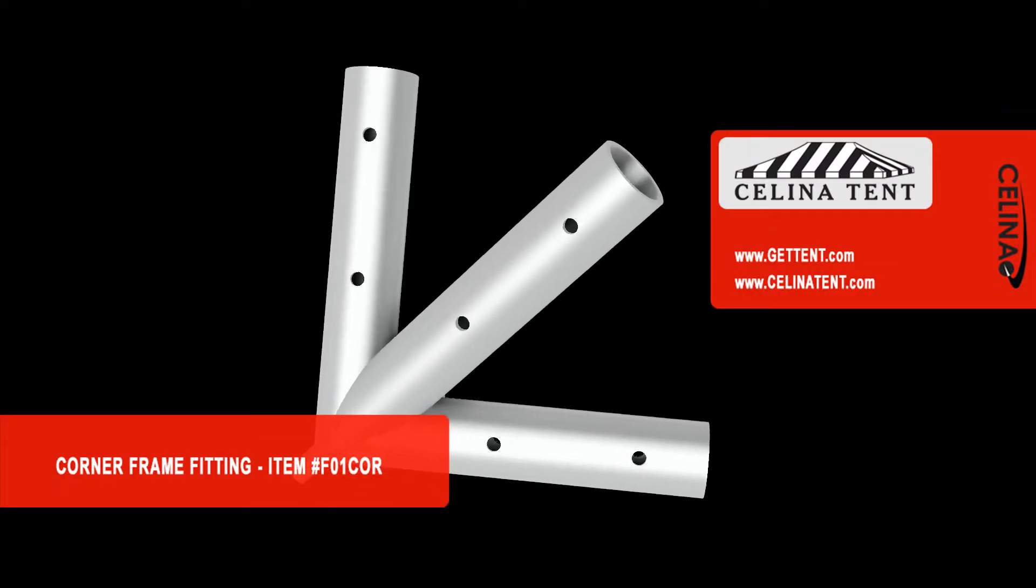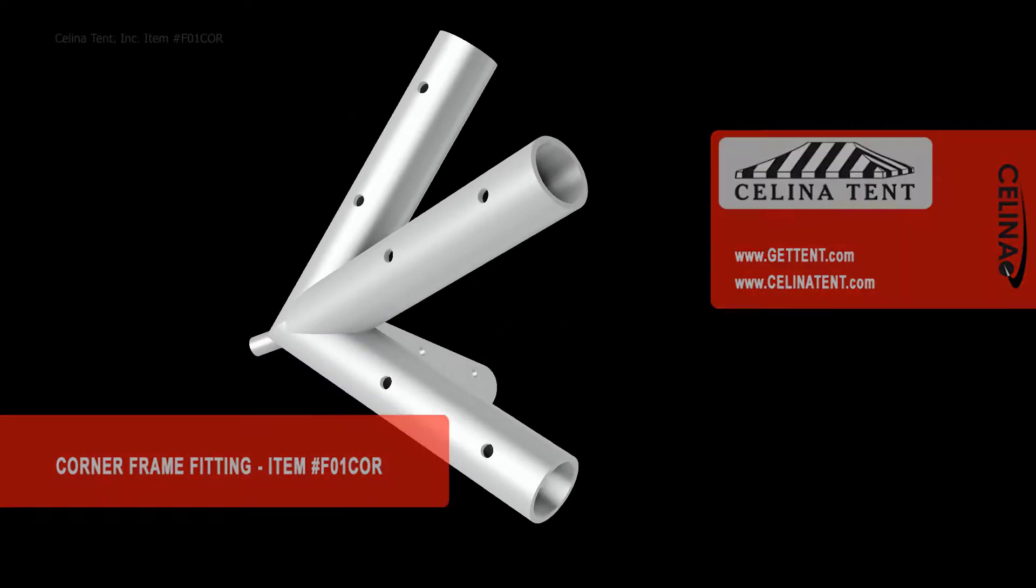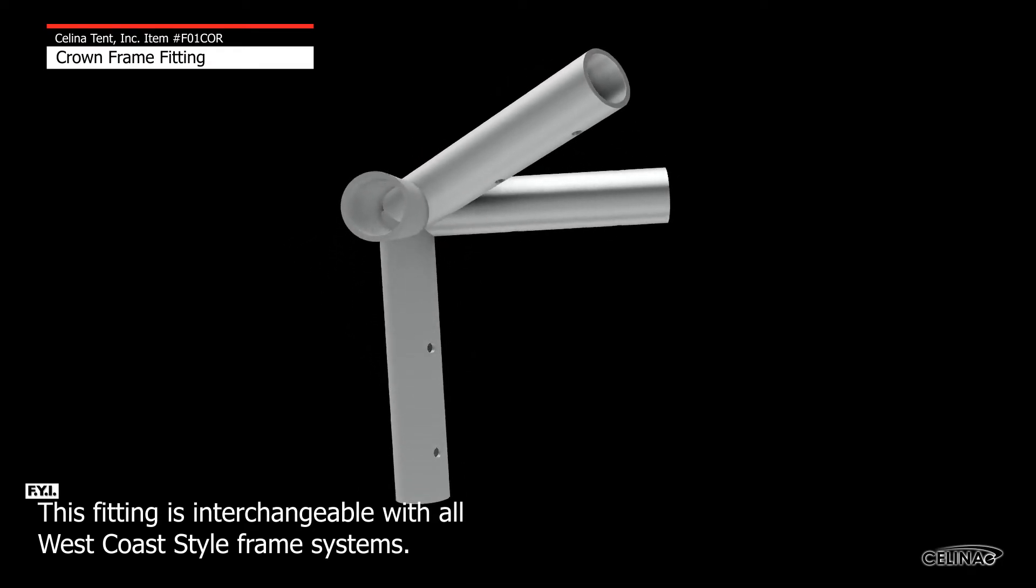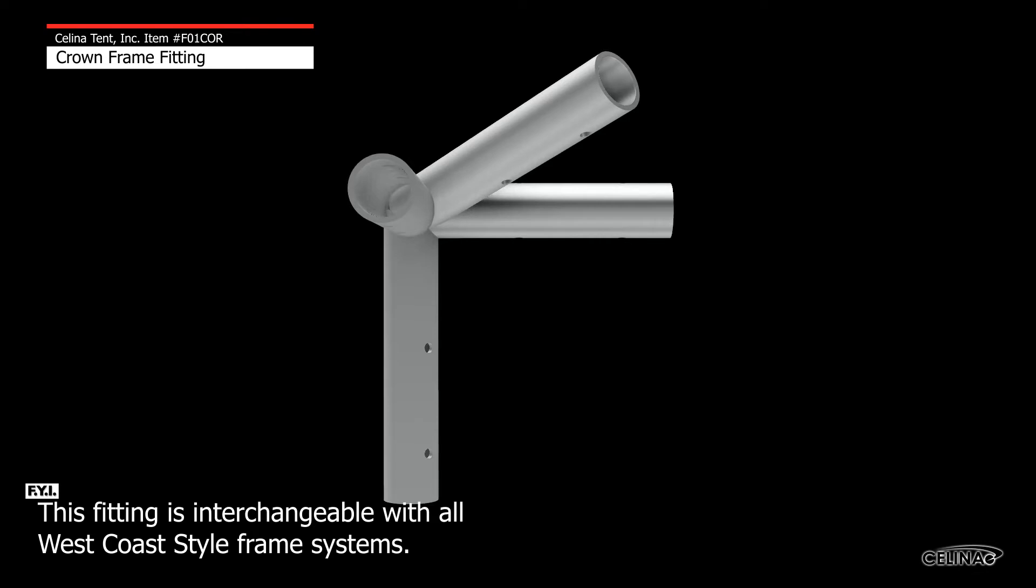This is an overview of a Salina corner fitting used in frame tents. A corner fitting is used in all frame tents that have hips or hip rafters. Four corner fittings are required per tent.